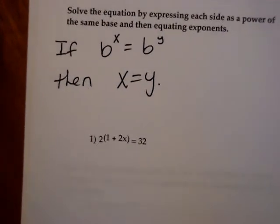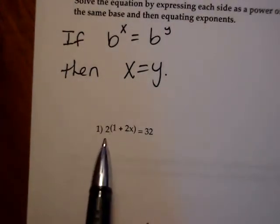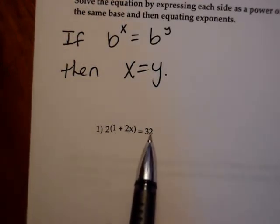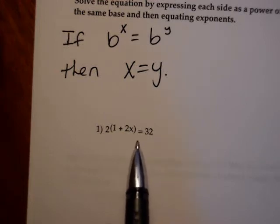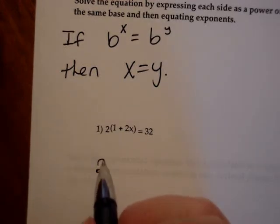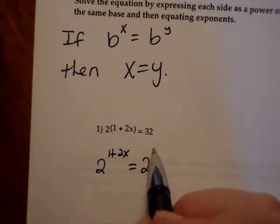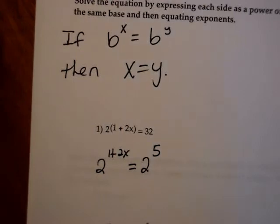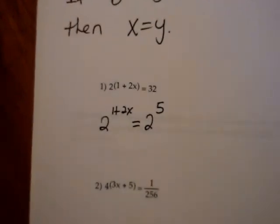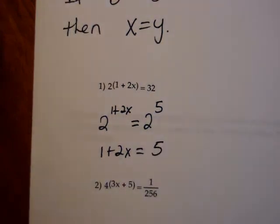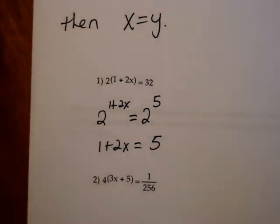Looking at number 1, I have 2 raised to the 1 plus 2x power. What I want to do is rewrite 32 as 2 to some power. So, 2 to the 1 plus 2x power equals 32, which is the same as 2 to the 5th. Once the bases are equal, I know the exponents have to be equal, and I solve that linear equation. You have the answer key.